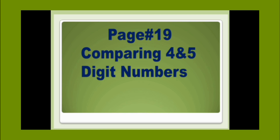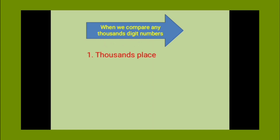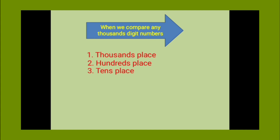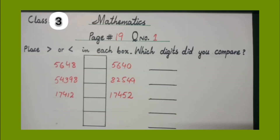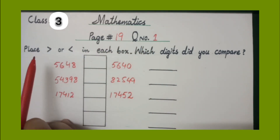When we start comparing thousand-digit numbers, we first compare at the thousands place, then the hundreds place, then the tens place, and finally the ones place. Now let's understand this comparison by solving question number 1 of page number 19 of your book.